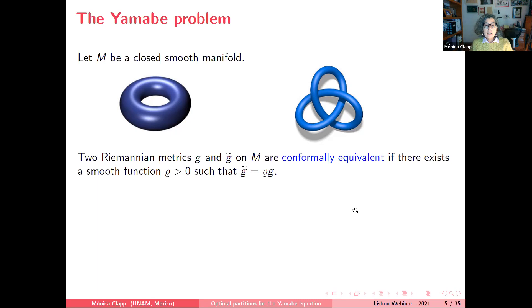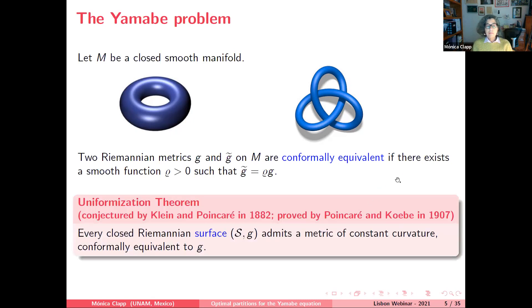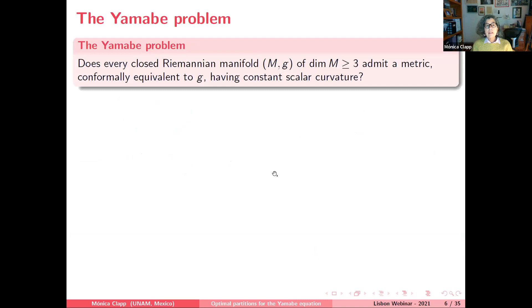There is a classical result proved by Poincaré and Koebe showing that if the manifold is a surface, it always admits a metric of constant curvature conformally equivalent to the given metric. It is natural to ask whether this result holds in higher dimensions. This question was asked by Yamabe and is known as the Yamabe problem: whether every closed Riemannian manifold M with metric G admits a conformally equivalent metric of constant scalar curvature.